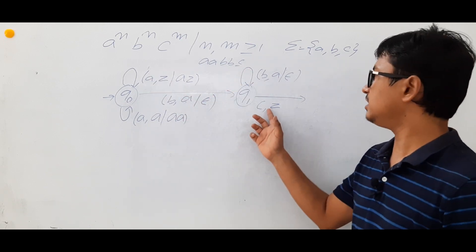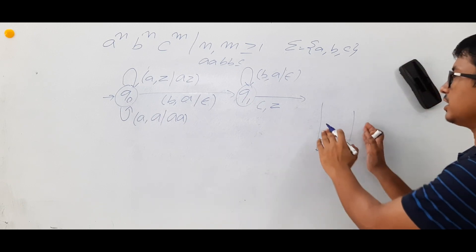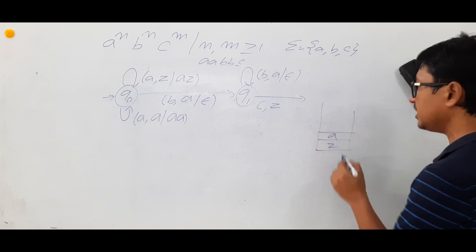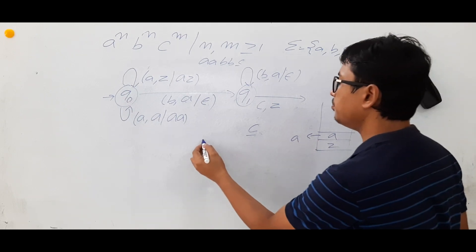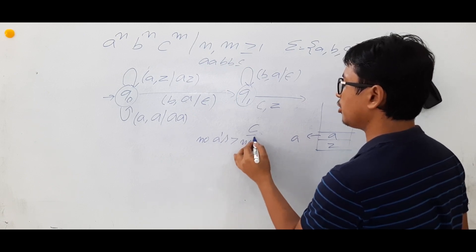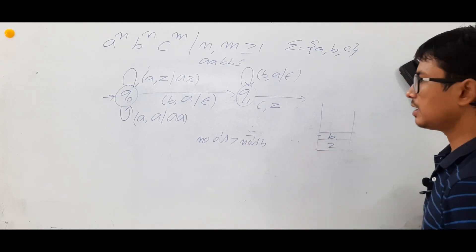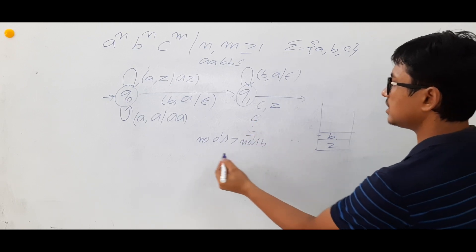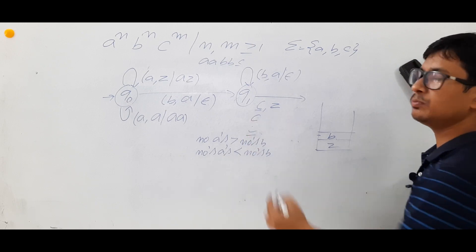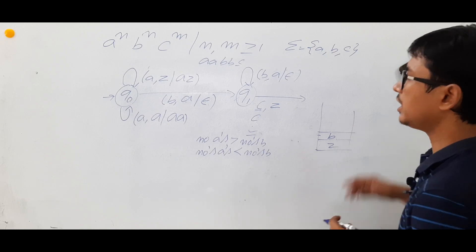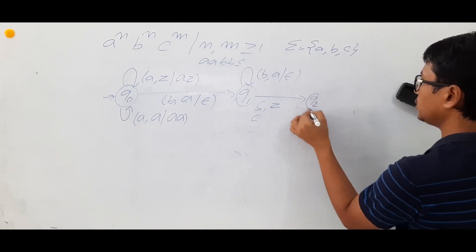When I see input 'c' and the stack top is Z, I can assume the number of a's equals the number of b's. However, if I see 'c' and the stack top is still 'a', it means the number of a's is greater than the number of b's — I should not accept. If the stack top is 'b' and input is 'c', the number of a's is less than b's — also not accepted. Only when input is 'c' and stack top is Z should I accept.